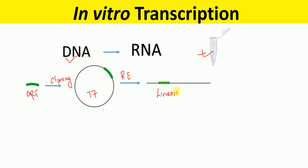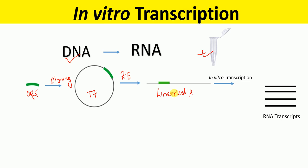After the sequence of interest has been cloned into the backbone plasmid, this plasmid is linearized using a suitable restriction enzyme to get a linearized plasmid. The linearized plasmid is then purified and used as a template for the in vitro transcription reaction.